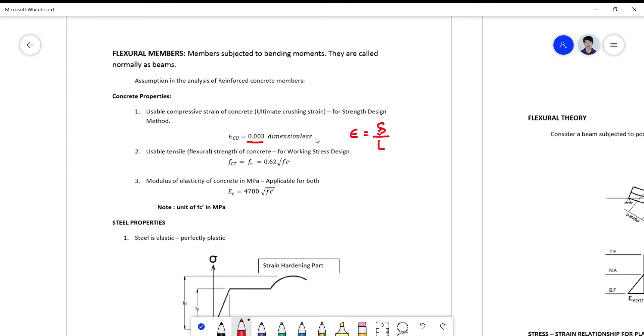And that's the reason why the epsilon cu, or the ultimate crushing strain of concrete, is dimensionless. For the usable tensile flexural strength of concrete for working stress design procedure, your fct is equal to fr which equals 0.62 times the square root of fc prime.